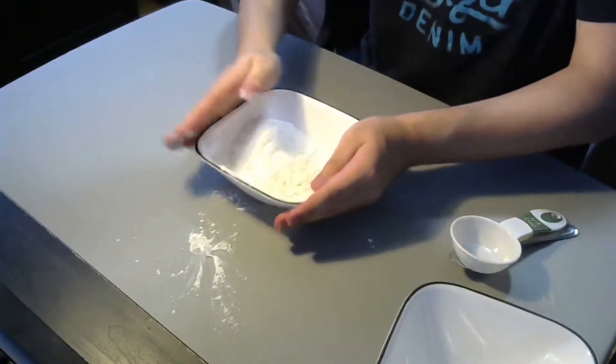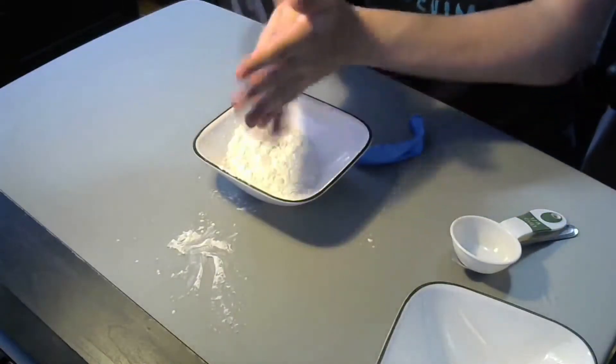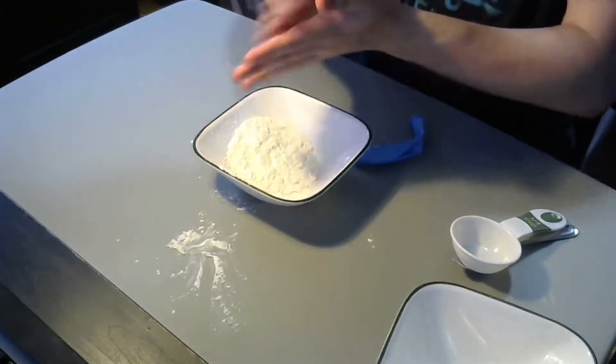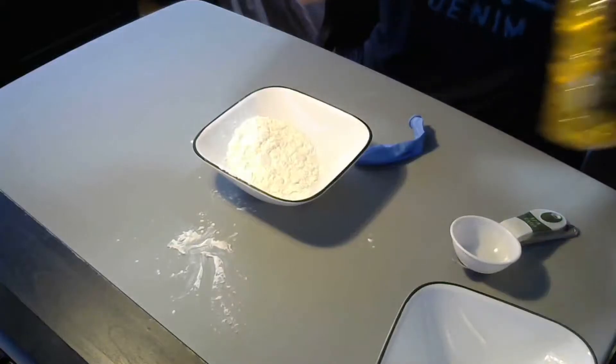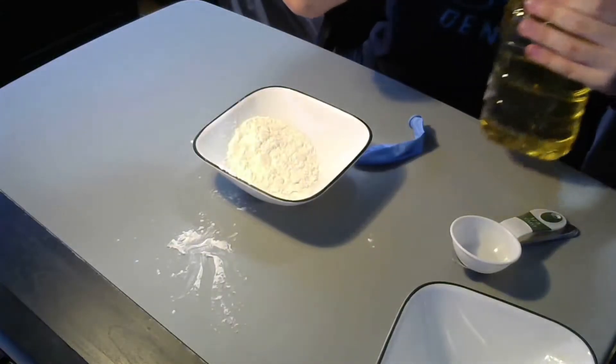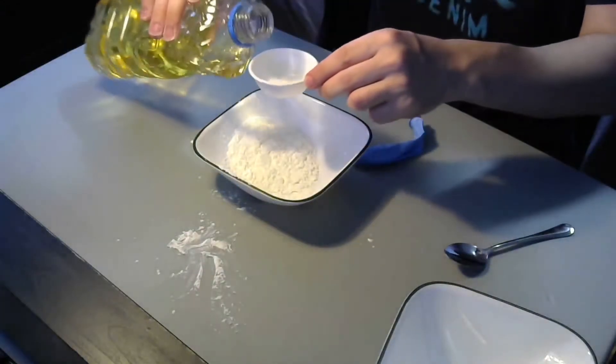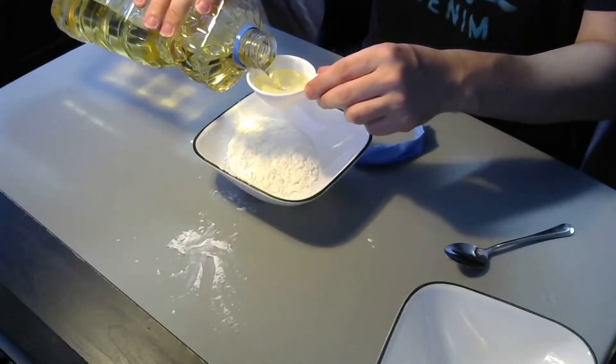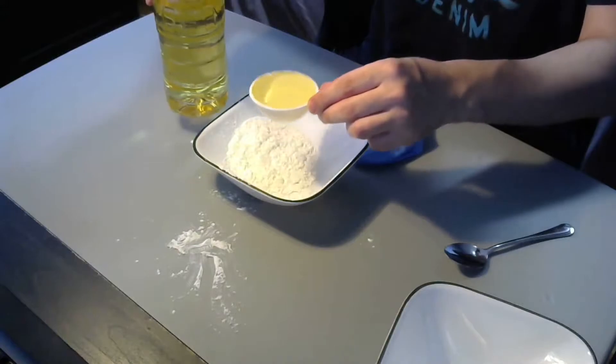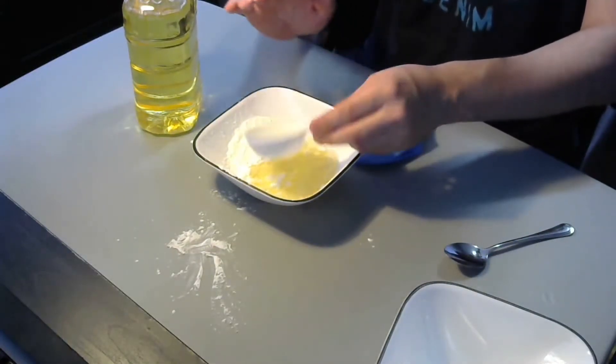And then you're also going to need for the first experiment one quarter cup of vegetable oil. Take this, pour it over just in case you spill. One quarter cup, pour that in, give it a little tap.